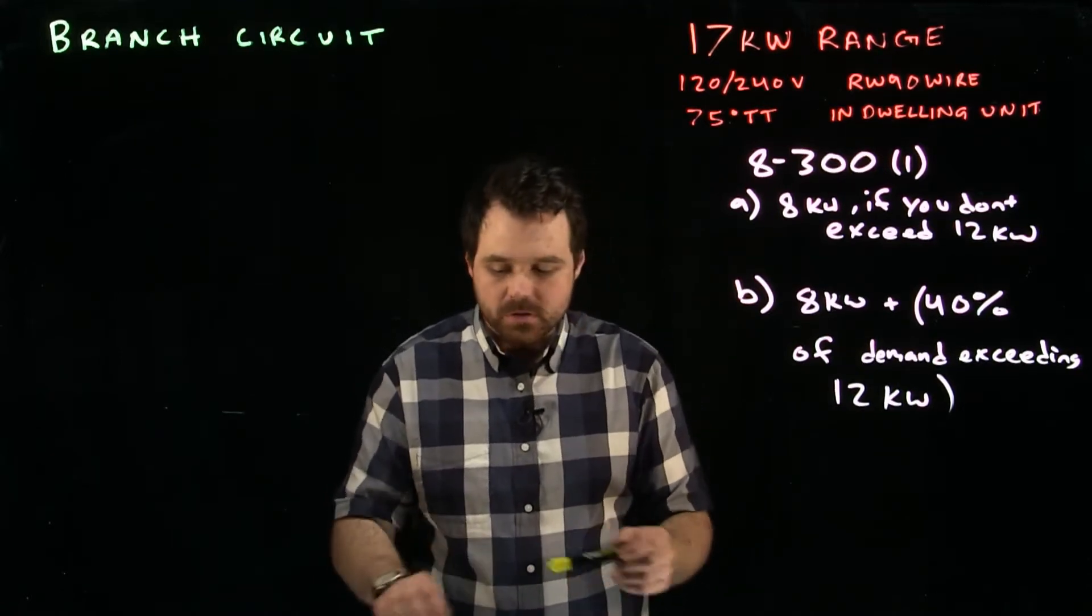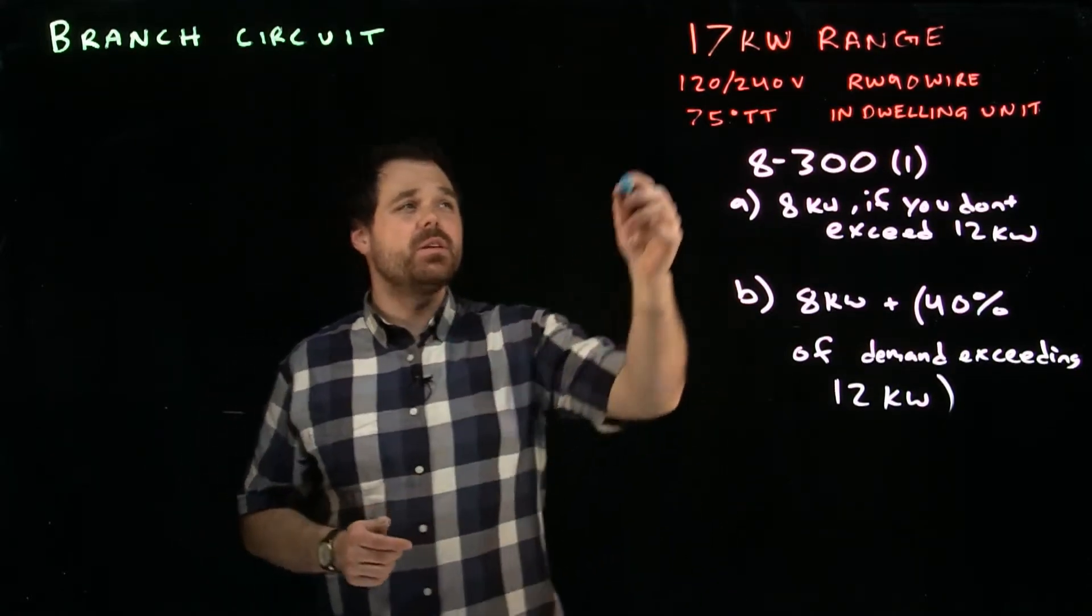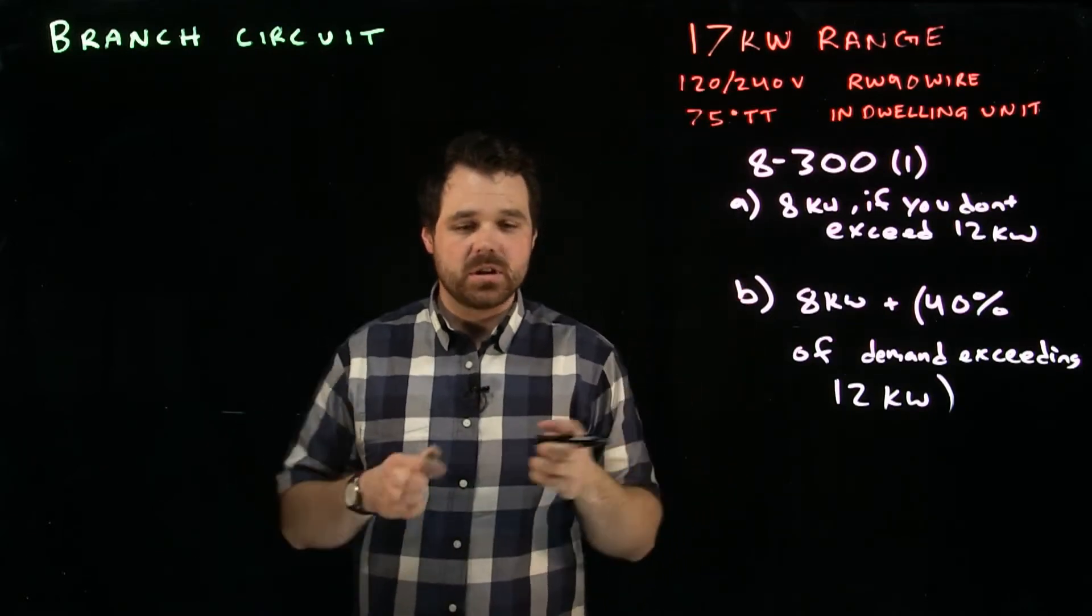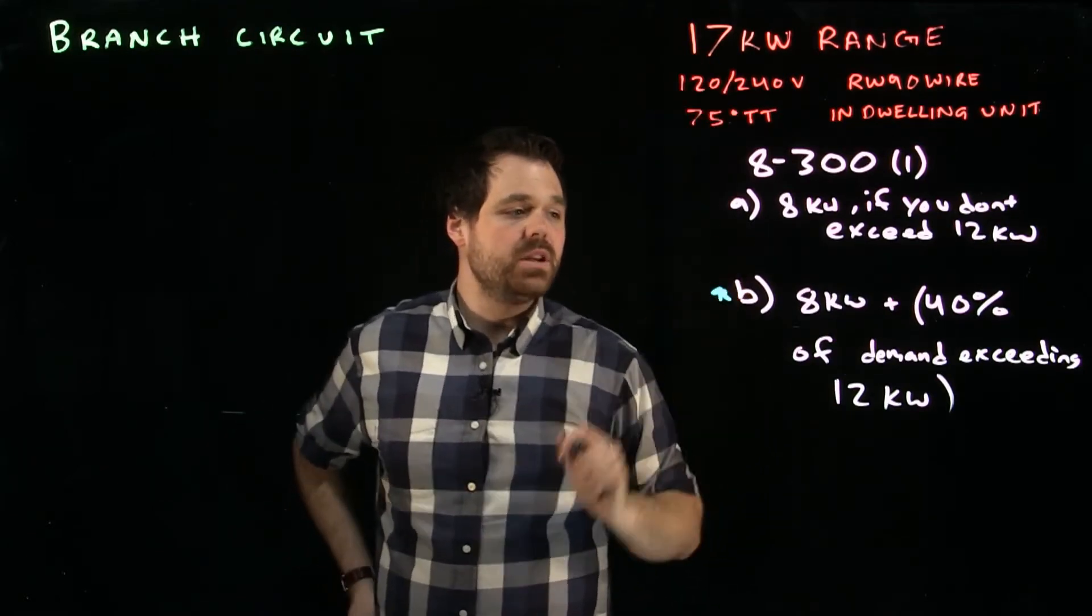So we have a process we want to follow. What we want to do is if we're dealing with this 17 kilowatt range, we are going to go with item B here.